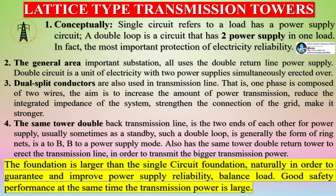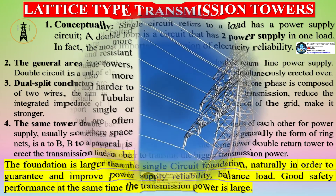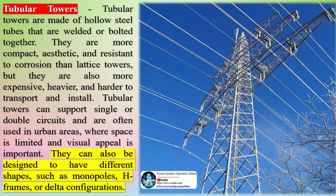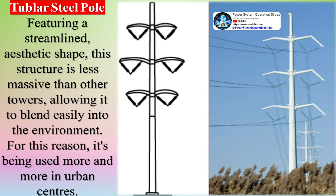Tubular towers are made of hollow steel tubes that are welded or bolted together. They are more compact, aesthetic, and resistant to corrosion than lattice towers, but they are also more expensive, heavier, and harder to transport and install. The tubular steel pole features a streamlined, aesthetic shape that is less massive than other towers, allowing it to blend easily into the environment.